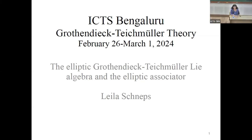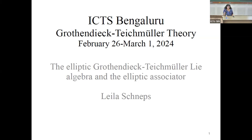My talk is going to follow on the talk we heard this morning by Bajama. I will start at the spot where Bajama stopped at the end. He was speaking of the map from the elliptic GRT, Grothendieck-Teichmüller group, to the Grothendieck-Teichmüller group by degeneration, by letting tau tend to infinity, and then there is a section going the other way.